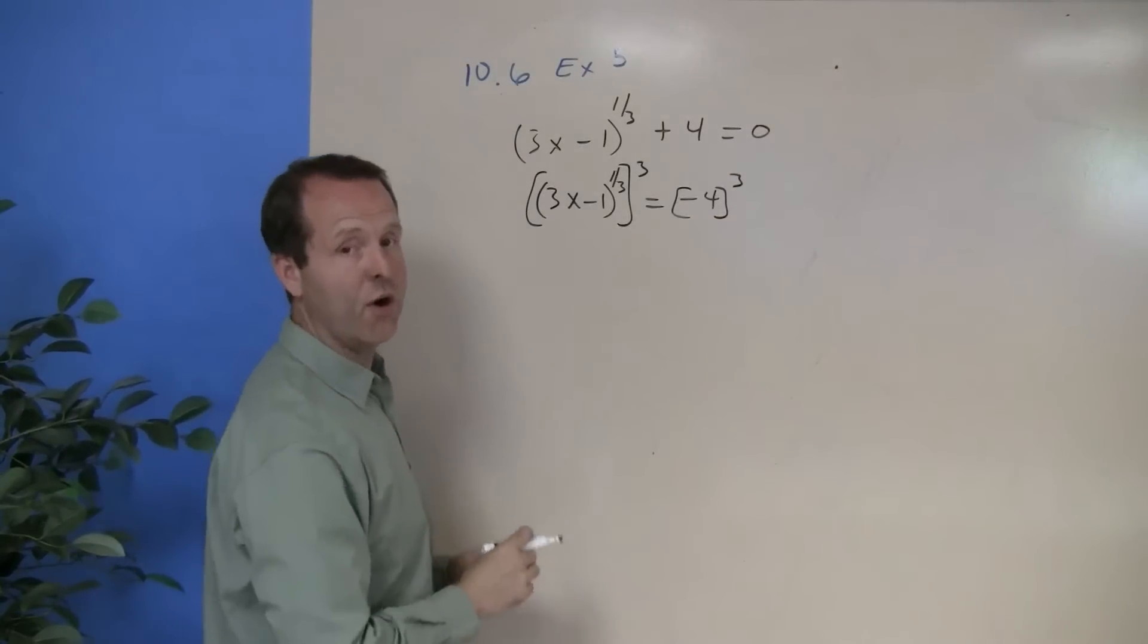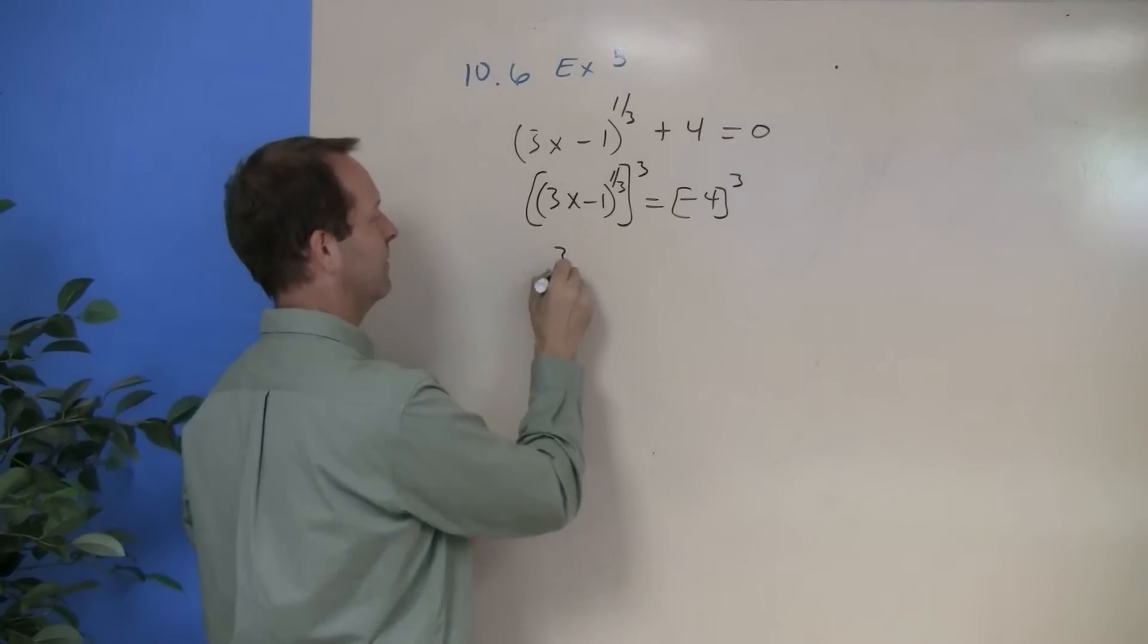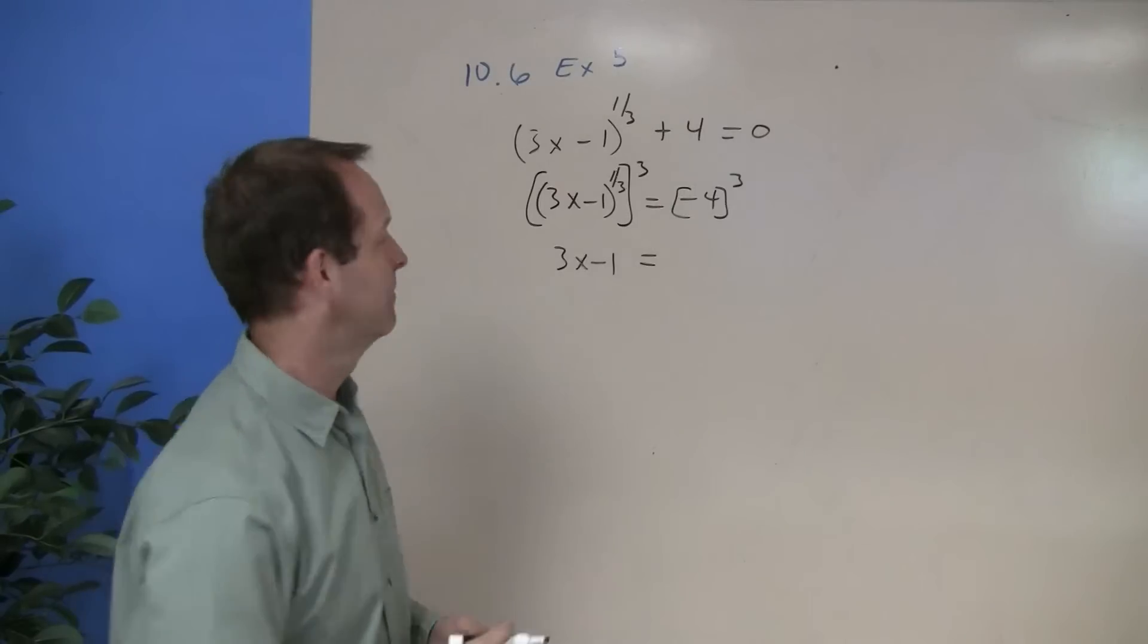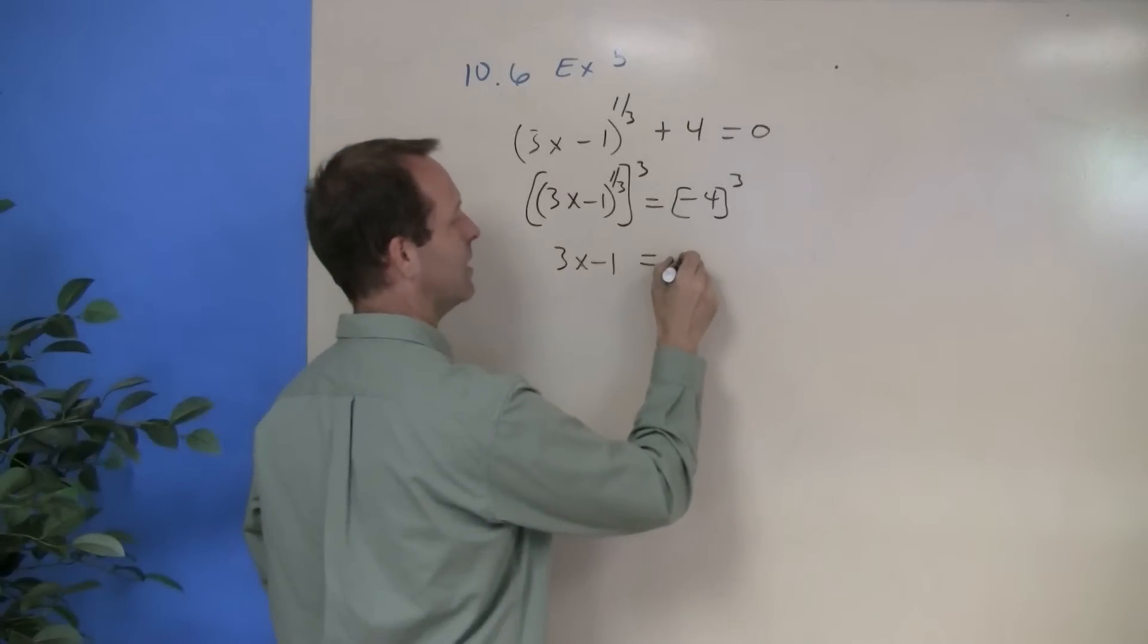3x minus 1 to the 1/3, to the third, is just 3x minus 1. And then negative 4 cubed is negative 64.